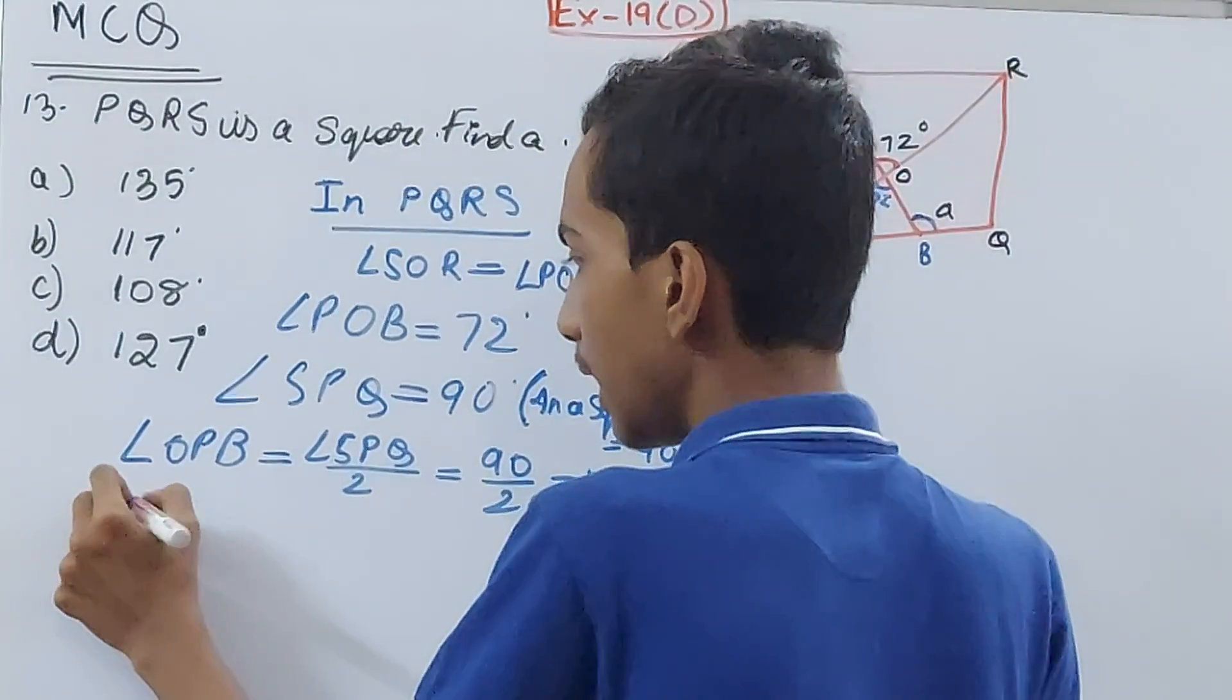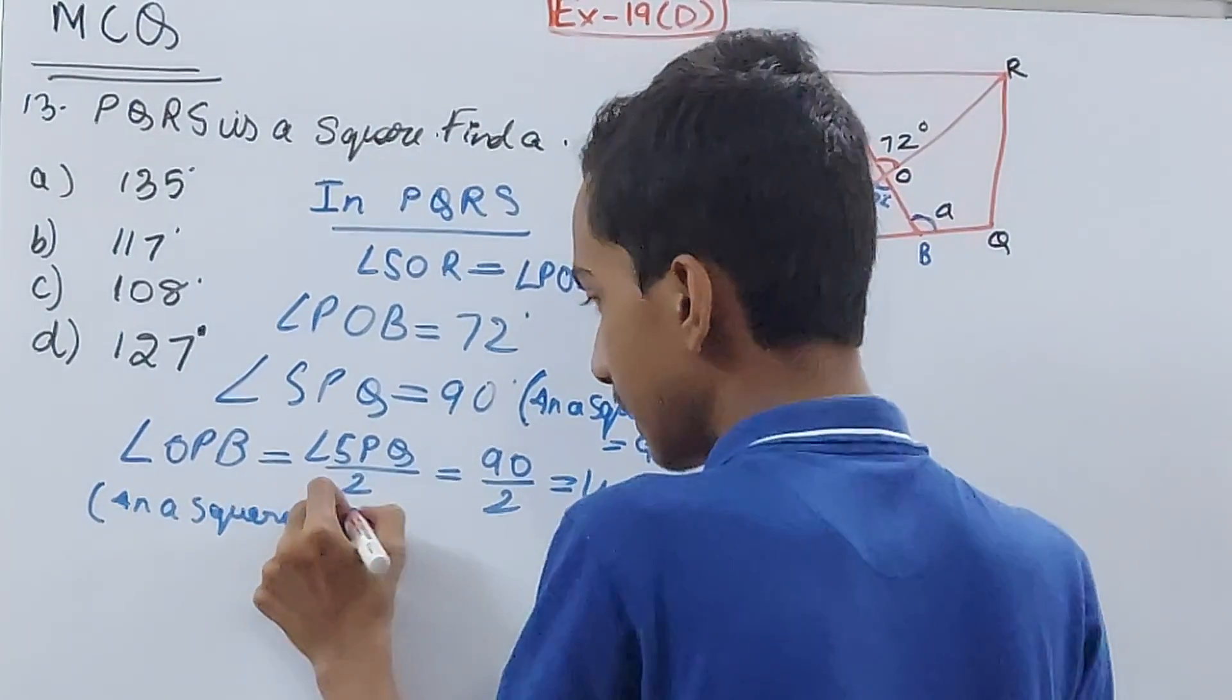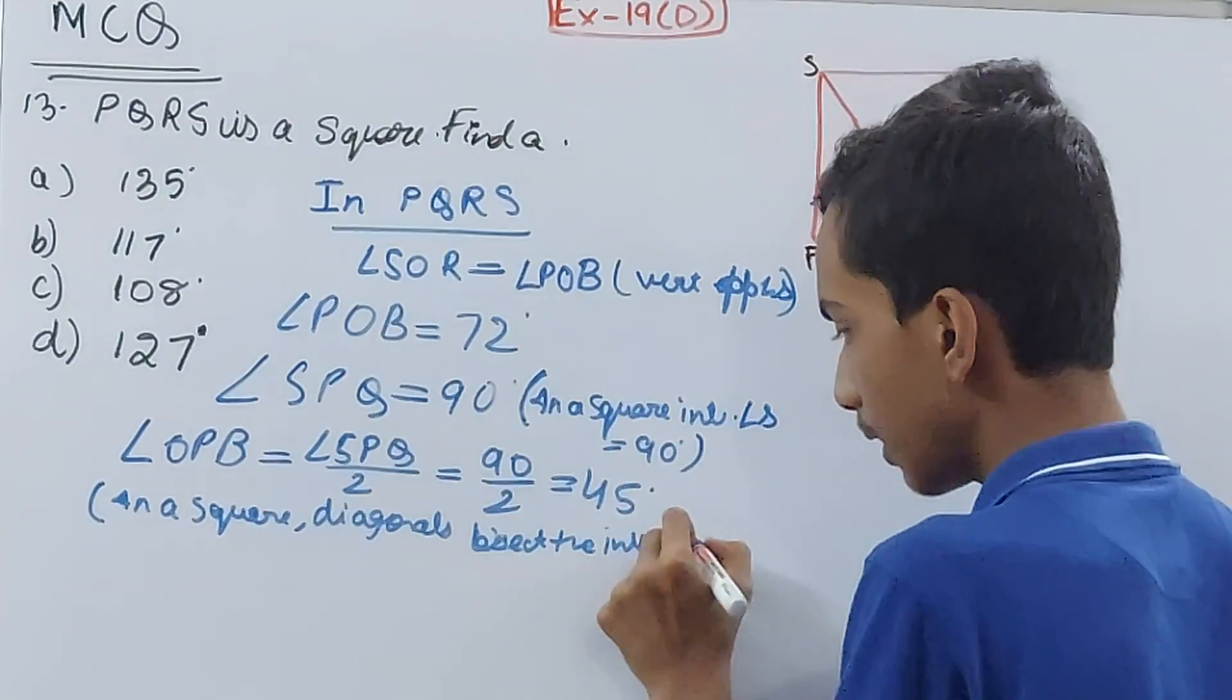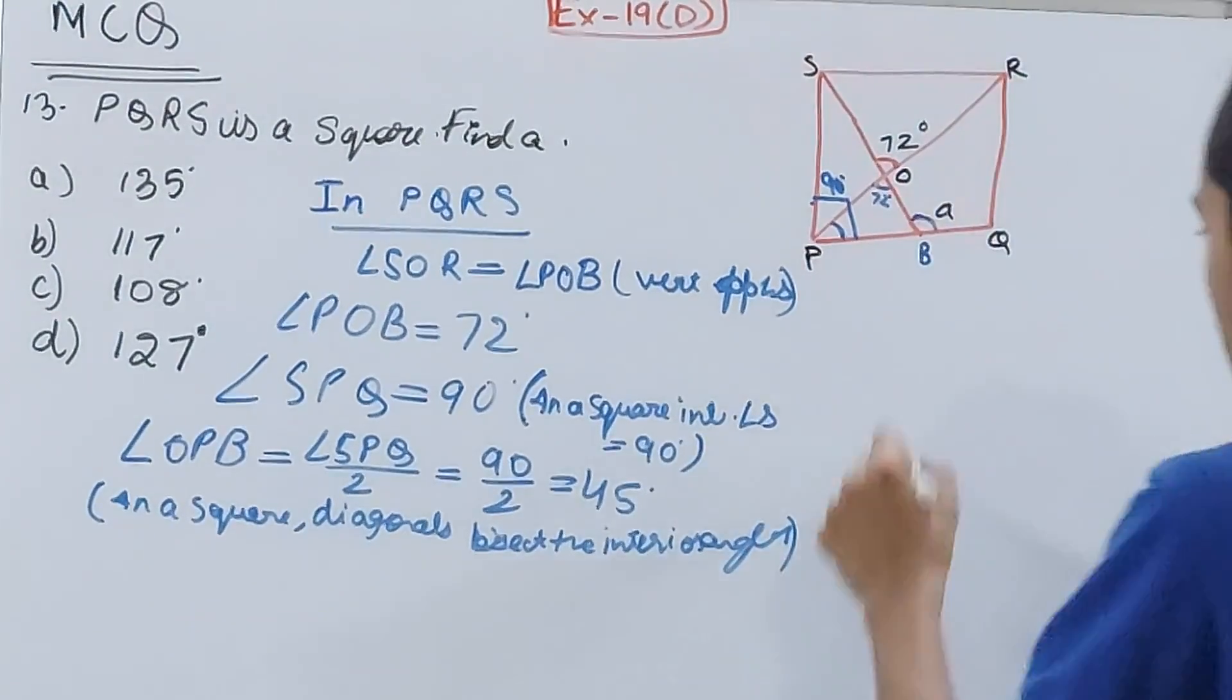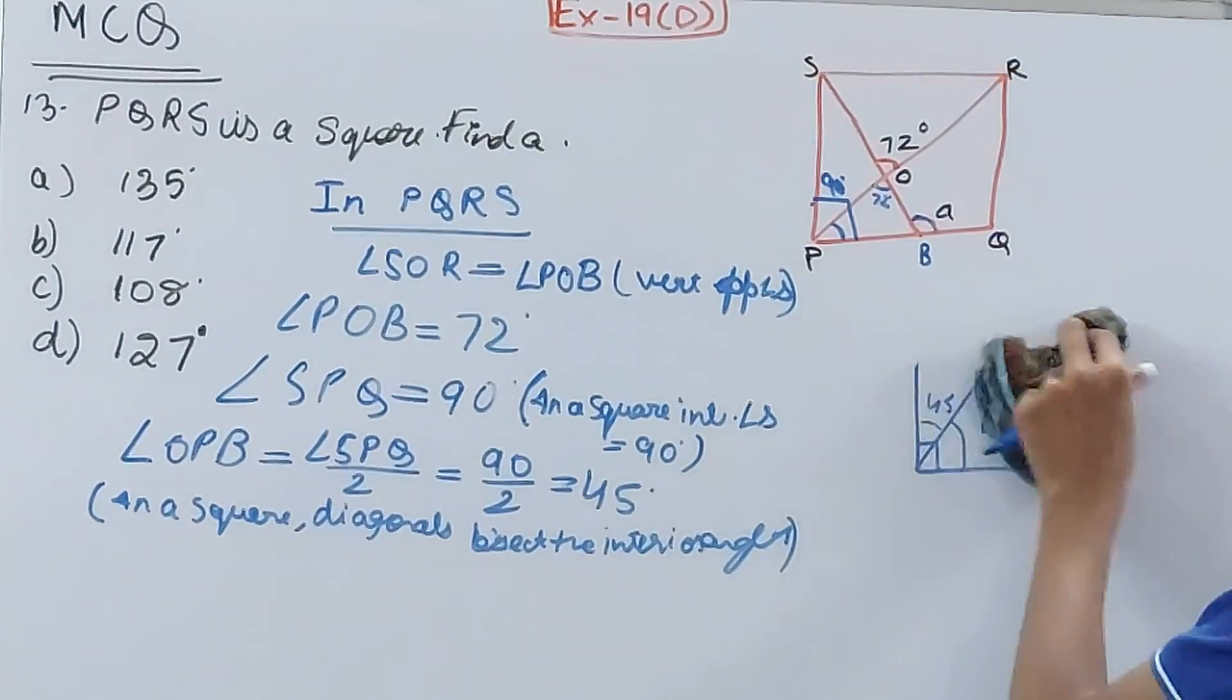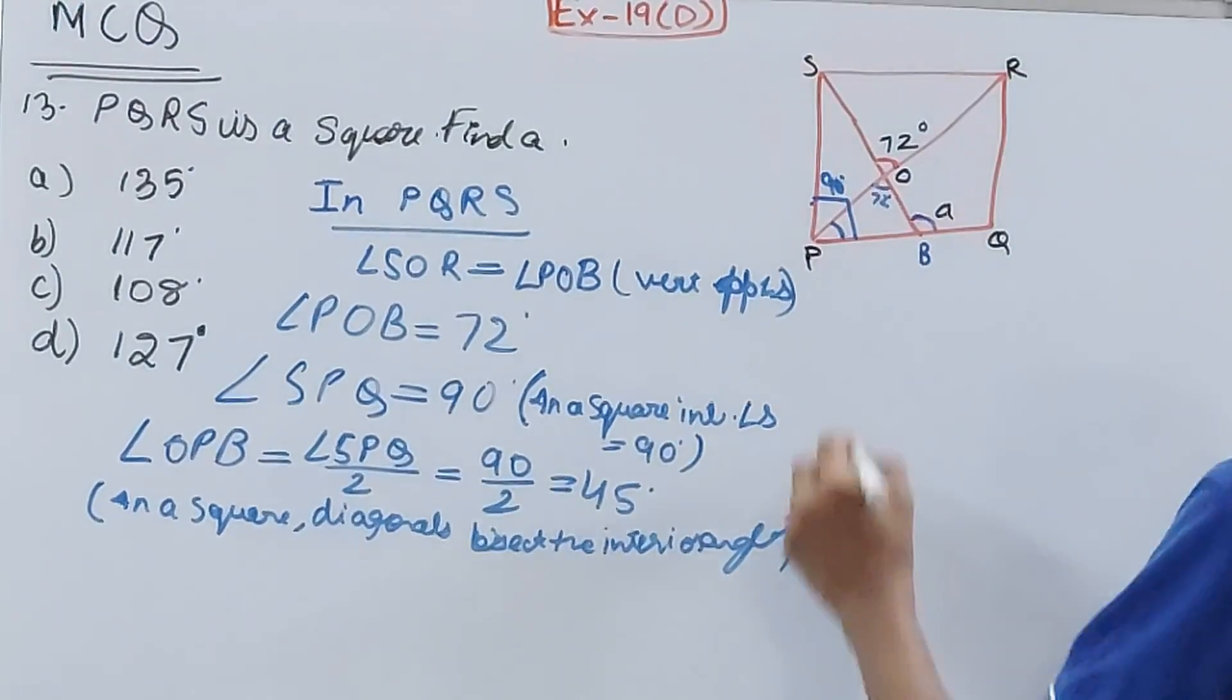It is because in a square, diagonals bisect the interior angles. We know this thing. When this is an interior angle that is 90 degrees, the diagonal will come and it will bisect it into two equal parts. It is 45, it is also 45. That is the simple thing. So that means I have obtained the third angle, OPB, 45 degrees.